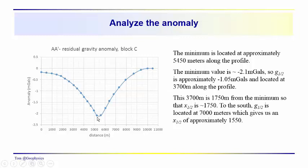Kind of refresh your memory about the analysis that we undertook before of spherically symmetric objects. First of all, you might notice that the minimum, in this case, we're kind of doing things relative to the minimum. It's located at about 5450 meters along the profile. And the minimum value is minus 2.1 milligals. So G1.5 is going to be located at approximately minus 1.05 milligals, probably right about there. And that would be at around 3700 milligals along the profile or 7000 meters along the profile. So you could use both of them at 3500 and 3700 and 7000 and take an average.